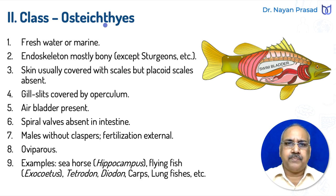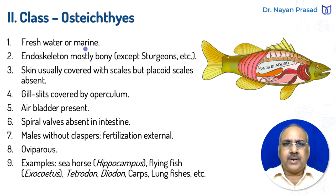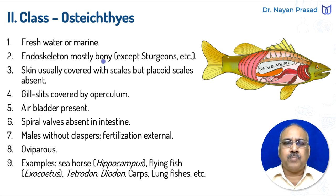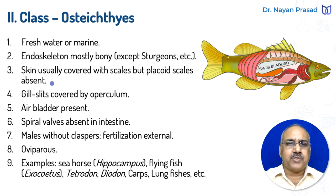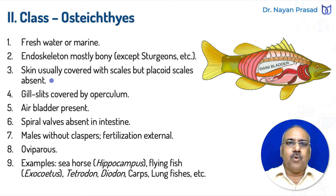Osteichthyes is the group of bony fishes. Fishes in this group are found in both freshwater and marine environments. Their endoskeleton is mostly bony — made up of bones — with one exception: the sturgeon. The skin is usually covered with scales, but placoid scales are absent in bony fishes. Scales are of different types: cycloid and ctenoid, but placoid scales are absent — this is one of the characteristic features.